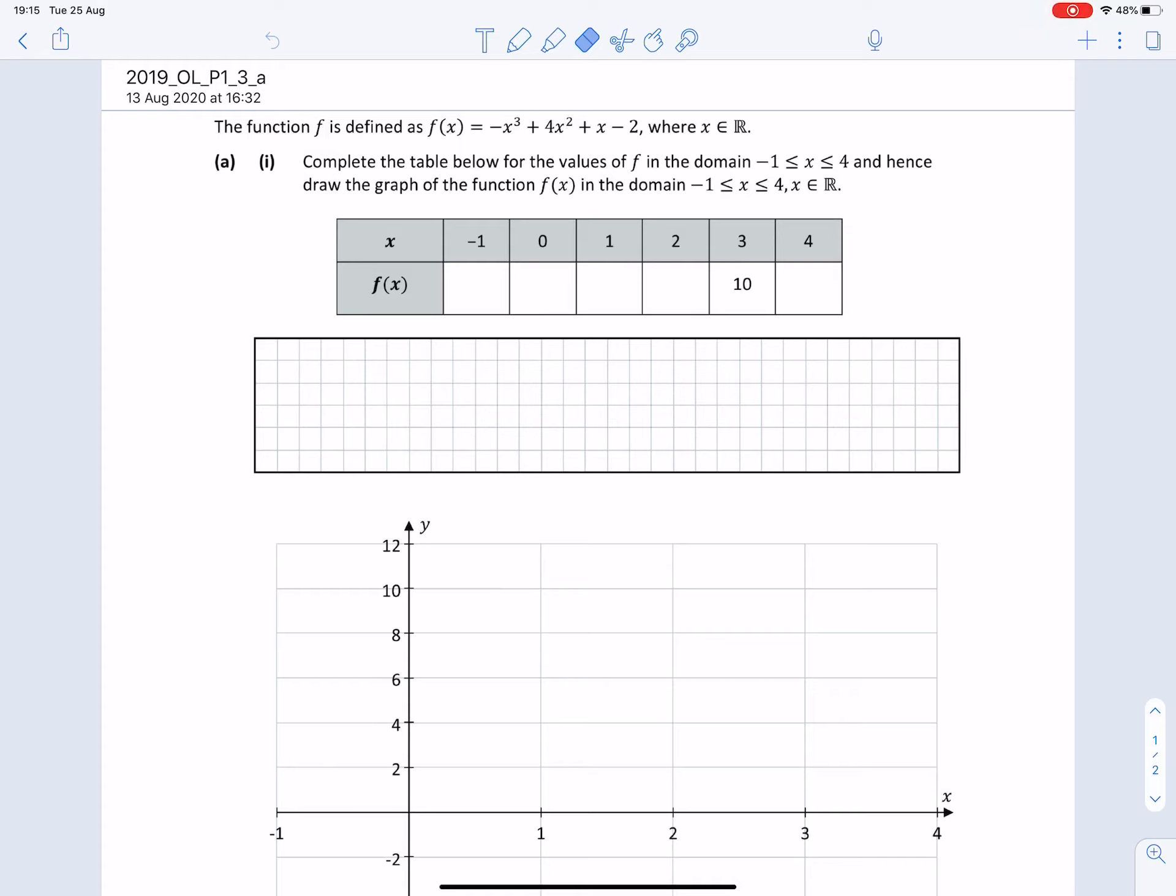So we have a function defined as f(x) equals minus x cubed plus 4x squared plus x minus 2, and we know that x belongs to a set of real numbers.